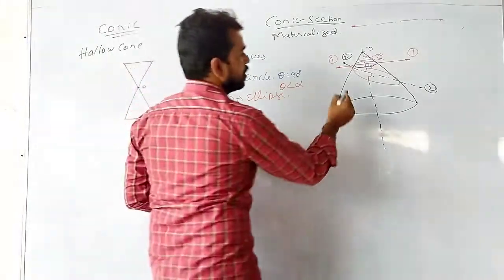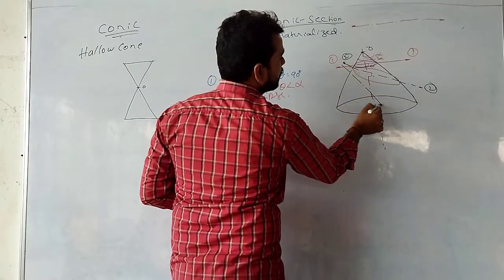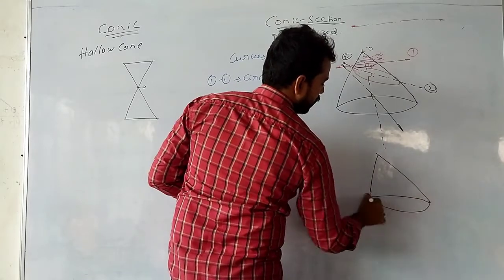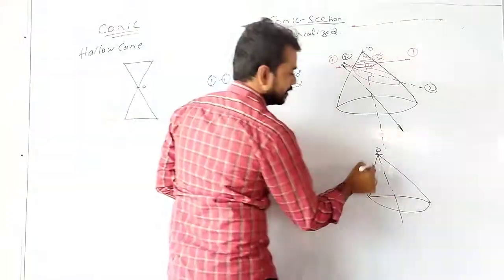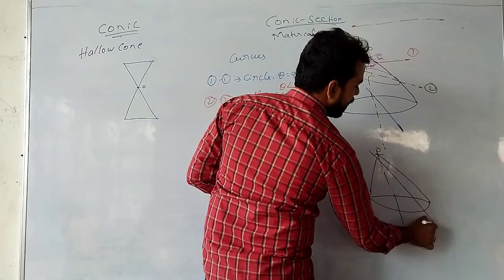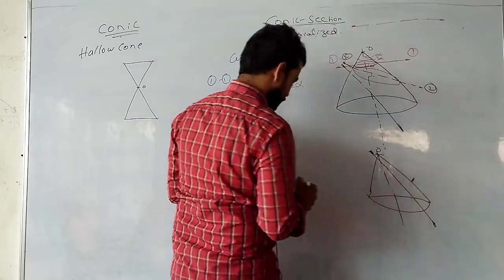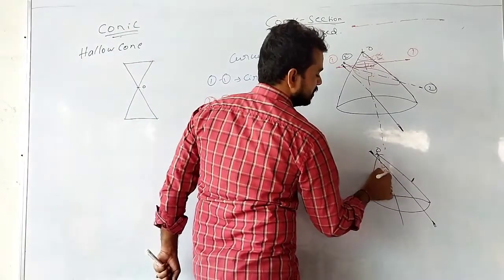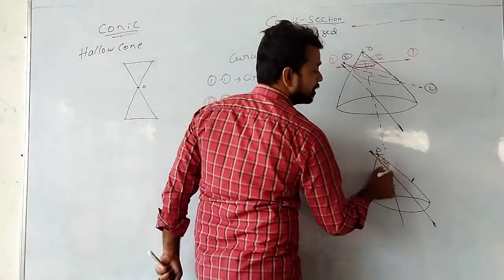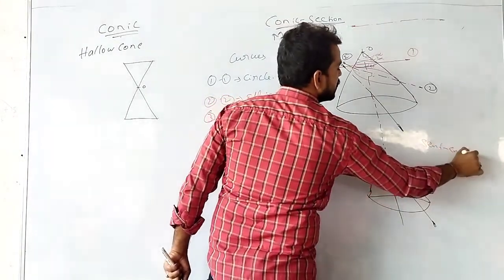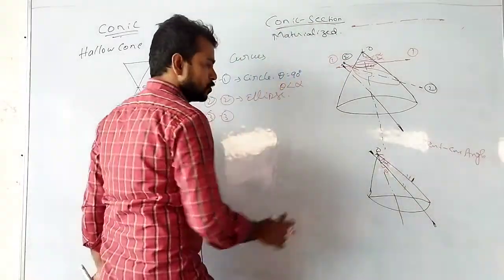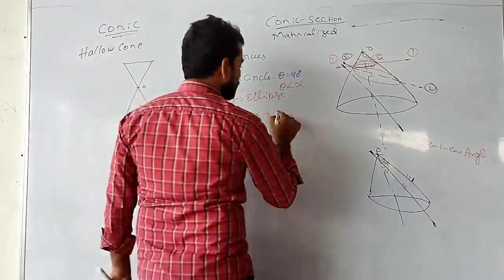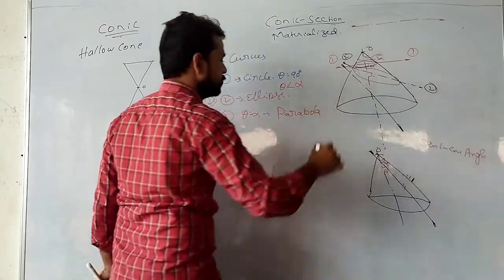Next, if the section plane cuts the cone parallel to one of the end generators — section 3-3 — then the angle made by the section plane with the axis equals the semicone angle alpha, so theta equals alpha. The curve you get is a parabola.